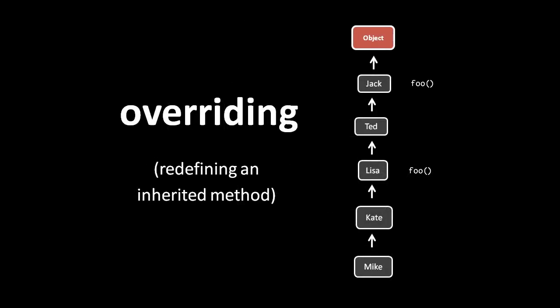To override in object-oriented programming means to redefine an inherited method. For example, if the jack class has a method named foo, all its descendants will have that method as well. However, if the lisa class also defines a method named foo, then lisa will have that foo instead of the one inherited from jack, and kate and mike will inherit lisa's foo, not jack's. The utility is that a subtype does all the same things as its ancestors, but may need to do a particular thing in its own specific way — like a cat eating in its own particular manner.